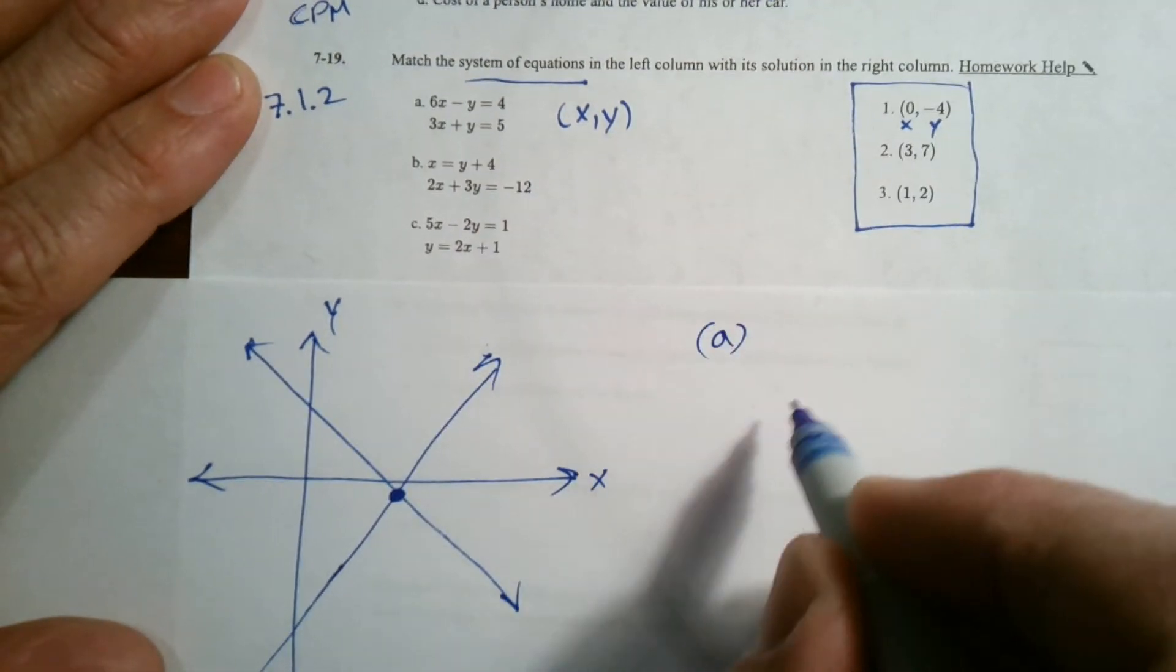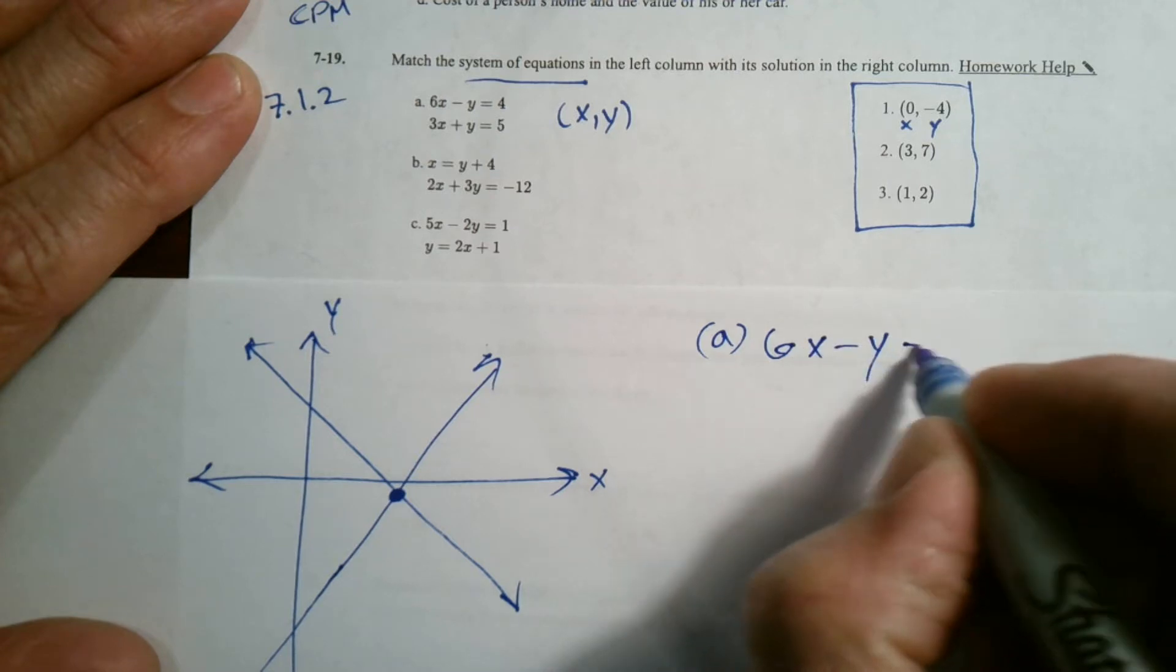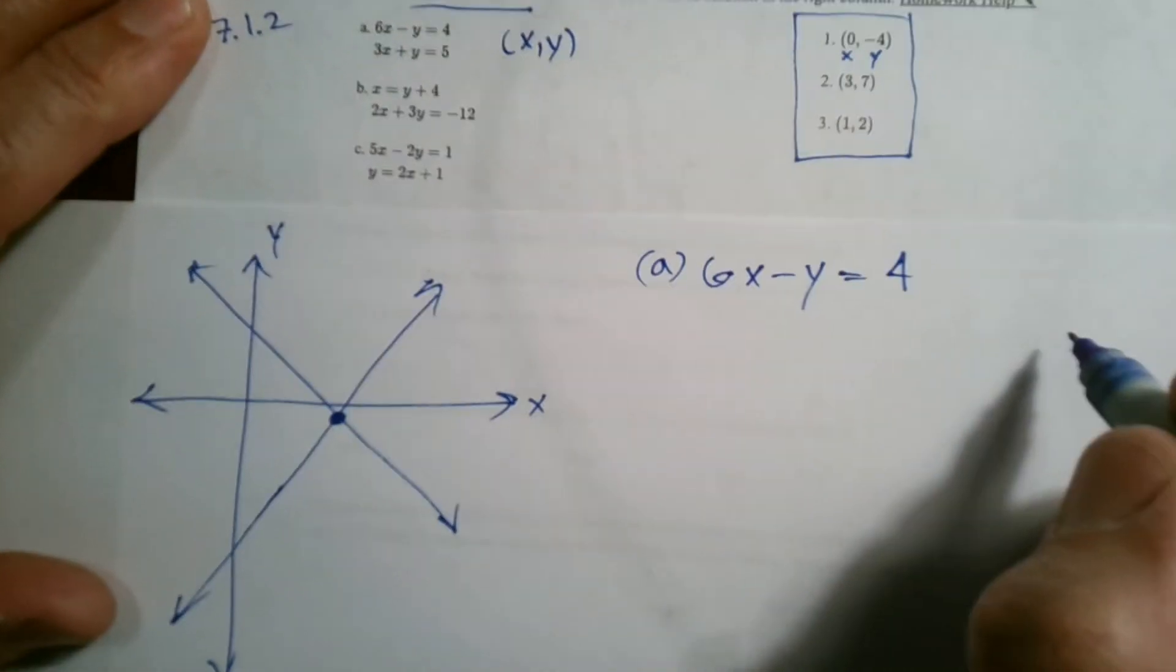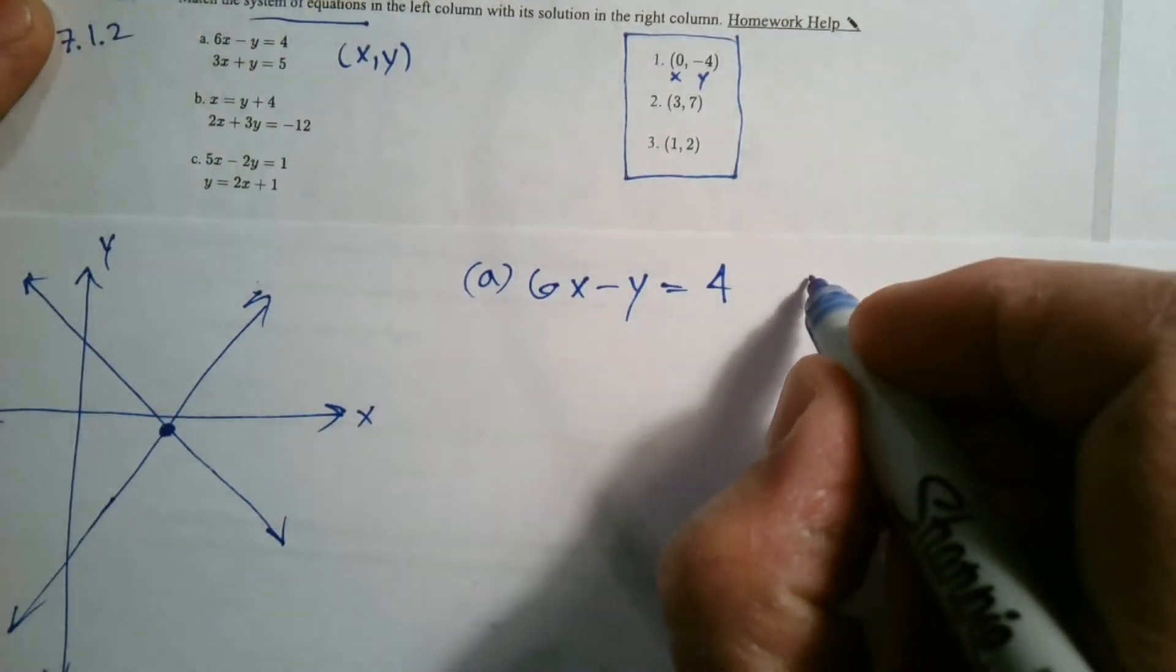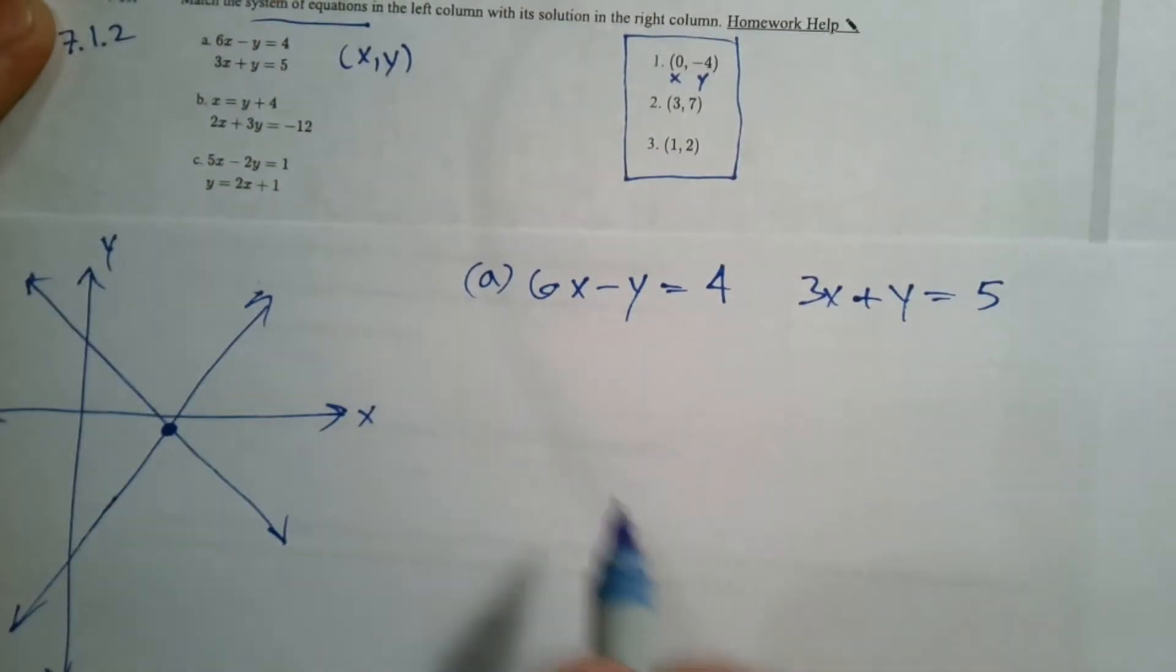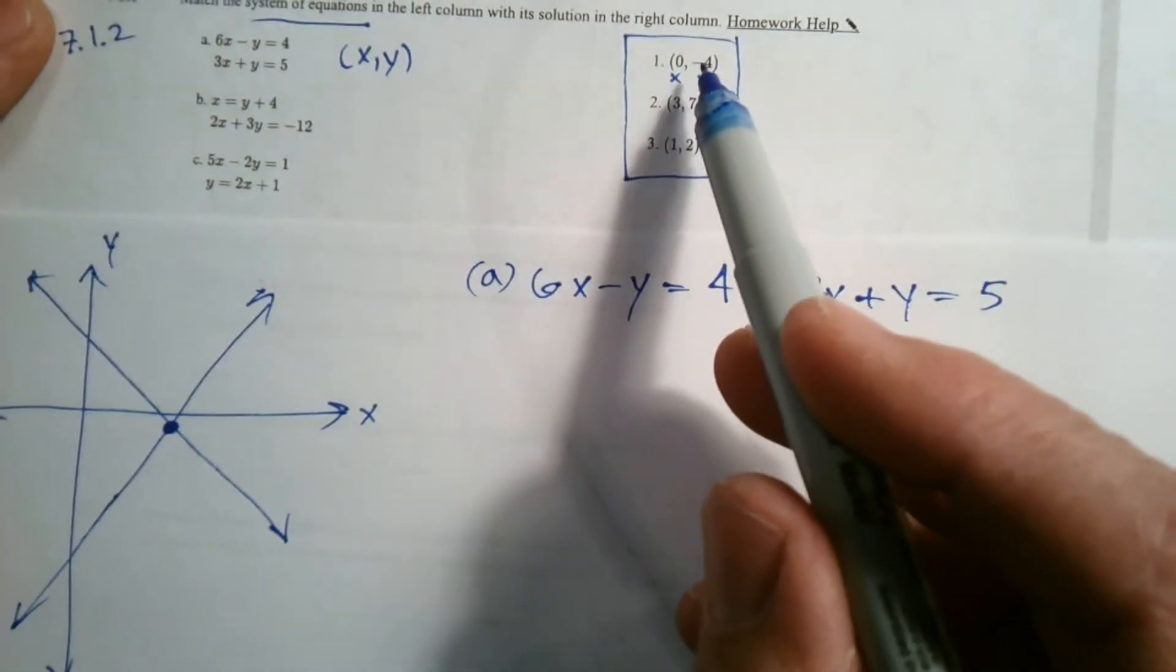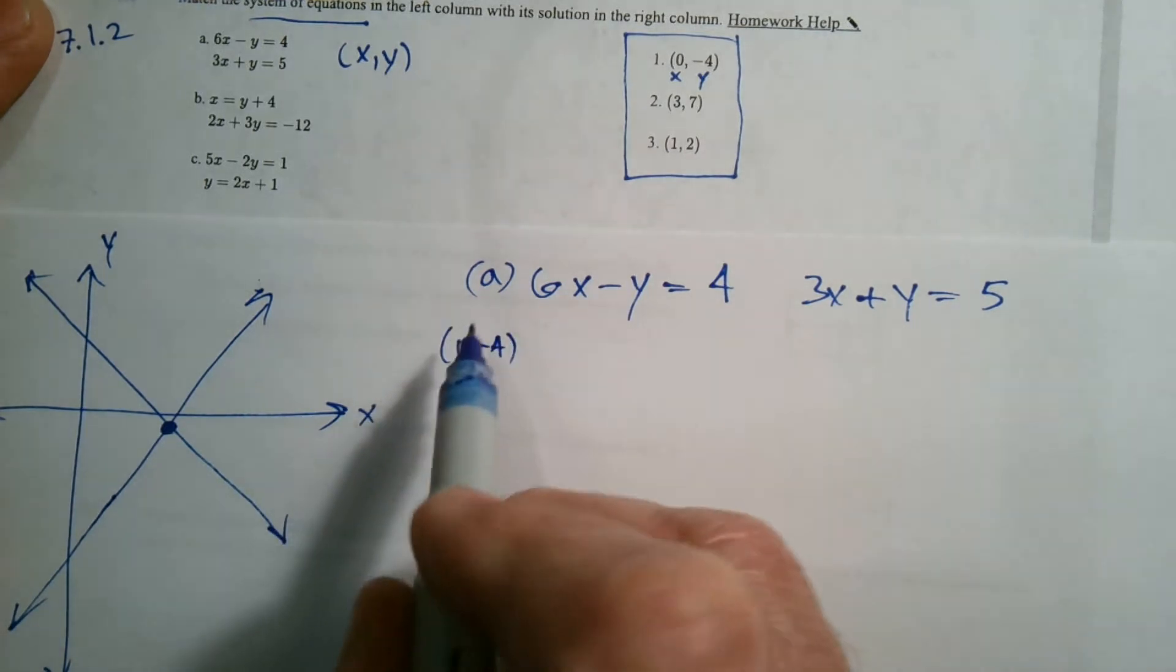So if I start off with a, and I'm just giving myself some room, I'll rewrite it. 6x minus y is equal to 4. And the other equation, I'm going to put them side by side instead of up on top of each other. So 3x plus y equals 5. So if I attempt to plug in, say, this one first here, let's try 0, negative 4. So what does that mean?